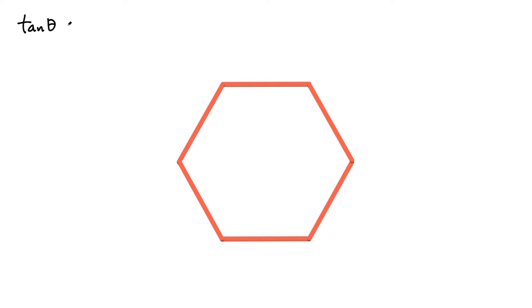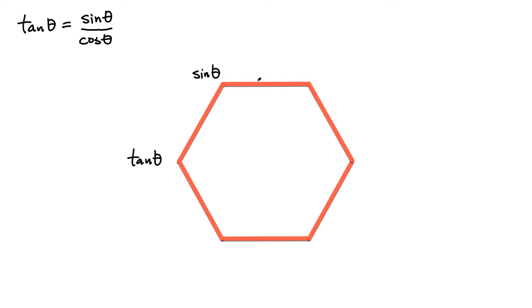It's called the super hexagon. What looks like a regular hexagon is going to be converted into a super hex. The way you do that is you first start with the definition: tangent of an angle theta equals sine of the angle theta divided by cos of the angle theta. We want to fill in the vertices of this hexagon, starting here with tangent of the angle theta. The top numerator is sine of the angle theta, and the next one is cos of the angle theta.